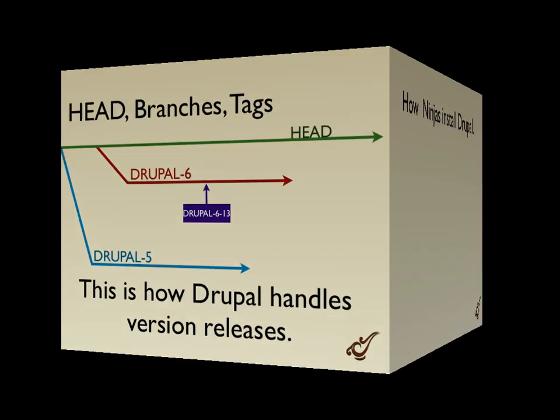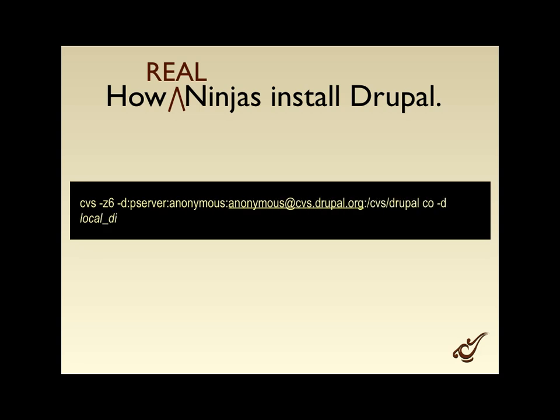So let's look at how real ninjas install Drupal. Here's that same CVS command we saw, but with a couple extra parameters — we've added compression so less data travels across the wire. I've abbreviated checkout as CO, added a dash-D for a local directory, and then there's the dash-R for the revision of Drupal. That specifies getting Drupal at the exact point in time the core maintainer said this is stable — Drupal 6.13.